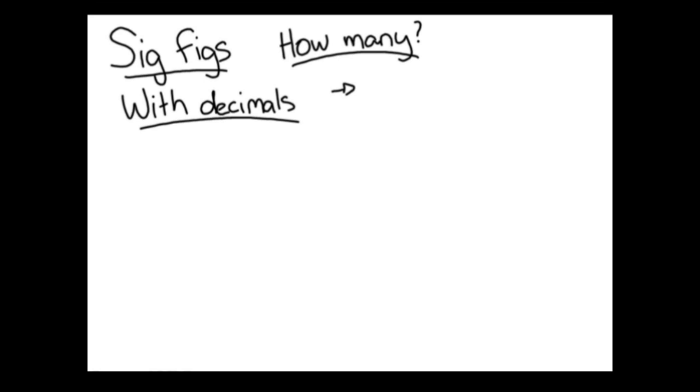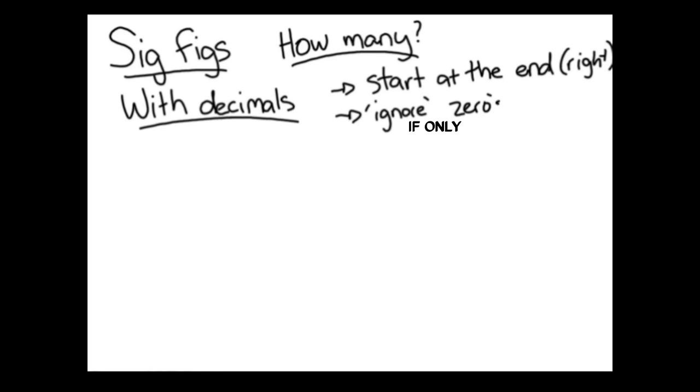When faced with such a number, you begin at the end of a number, or to the utmost right. You then count towards the left, and you stop when you reach the last non-zero digit. Ignore if there are only zeros to the left.